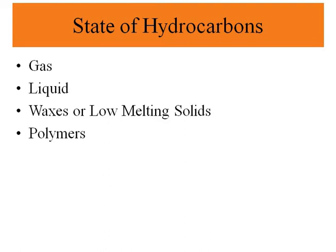Now let's look at the different phases of hydrocarbons. Hydrocarbons can be gases — such as methane and propane; liquids — such as hexane and benzene; waxes or low-melting solids — such as paraffin wax or naphthalene; or, when they have higher molecular weight, polymers — such as polyethylene, polypropylene, and polystyrene.